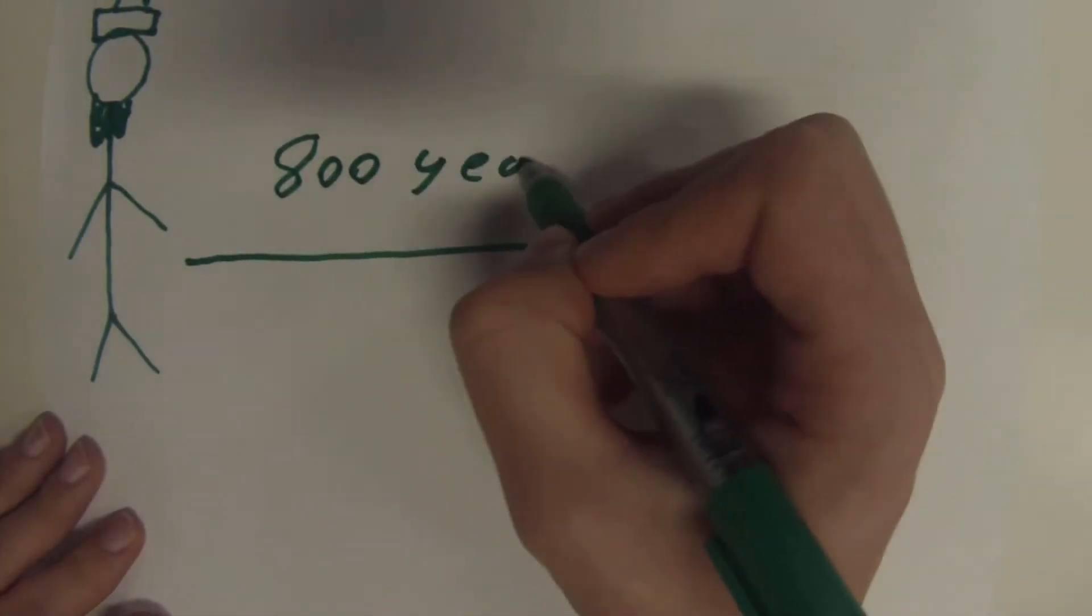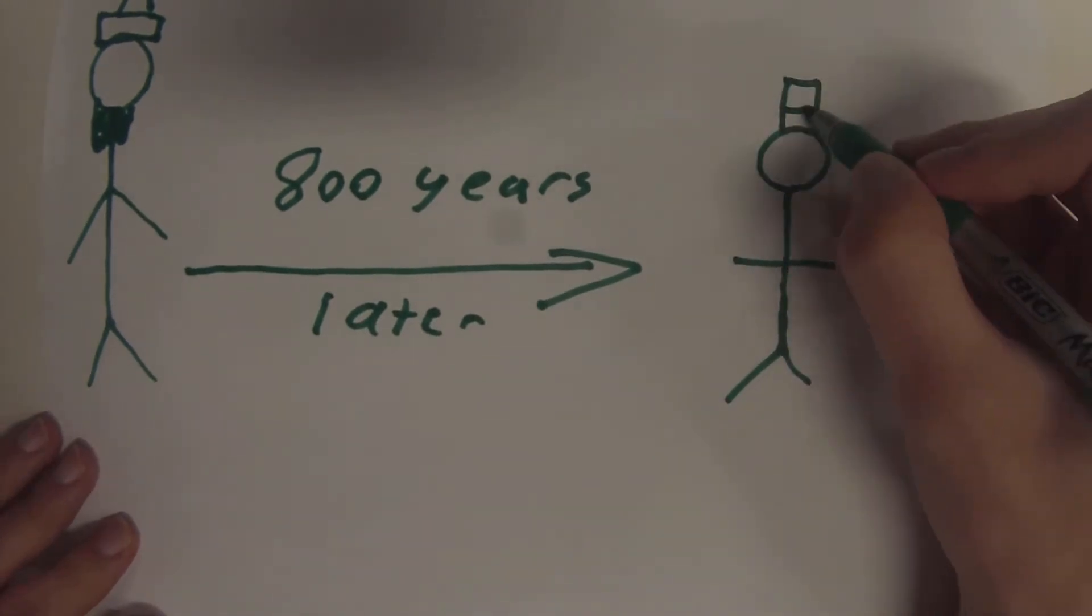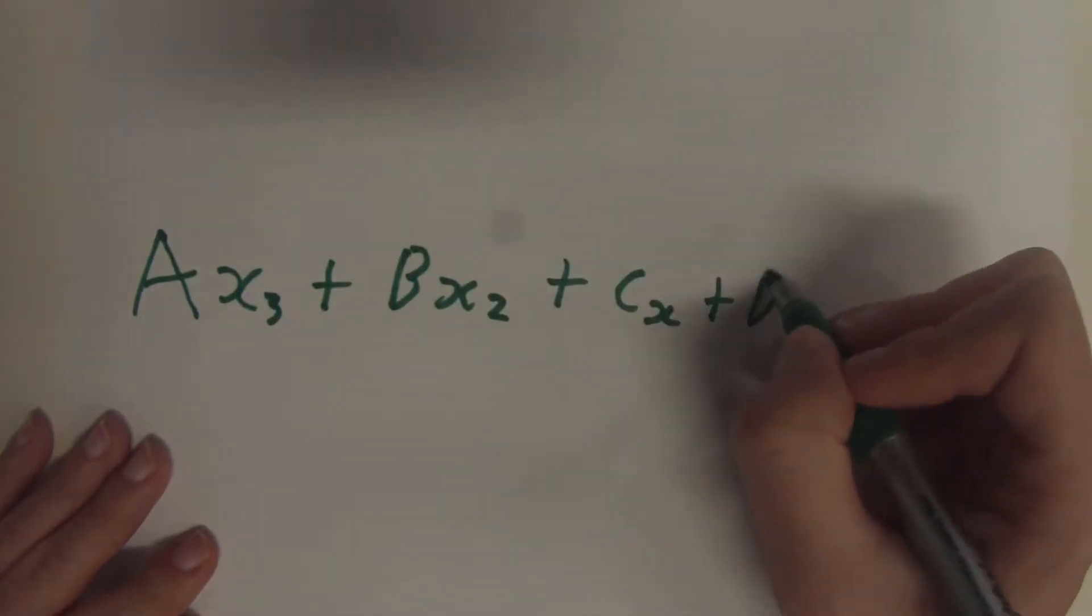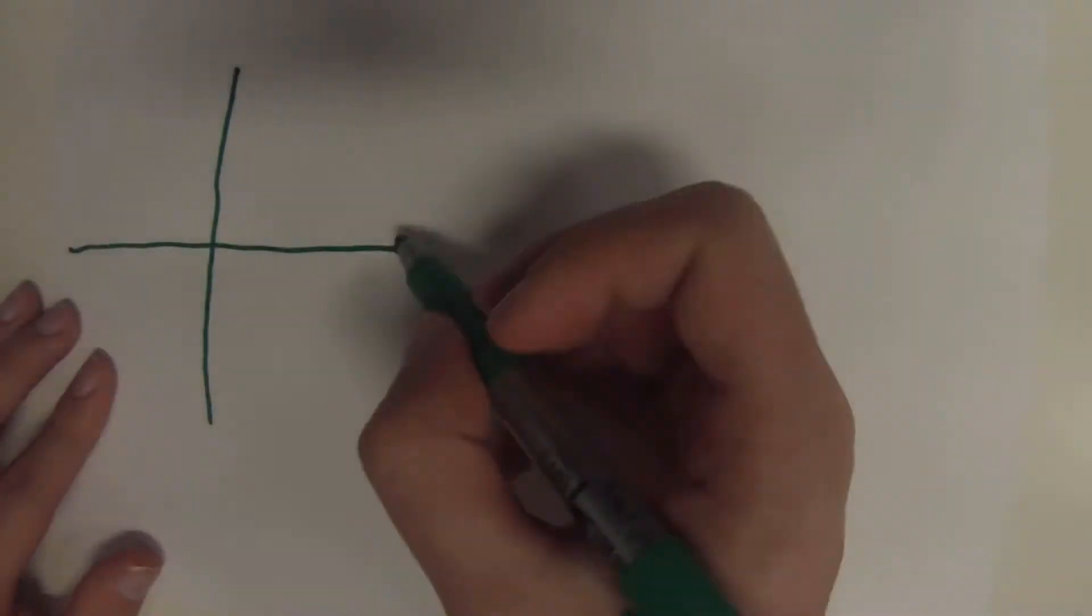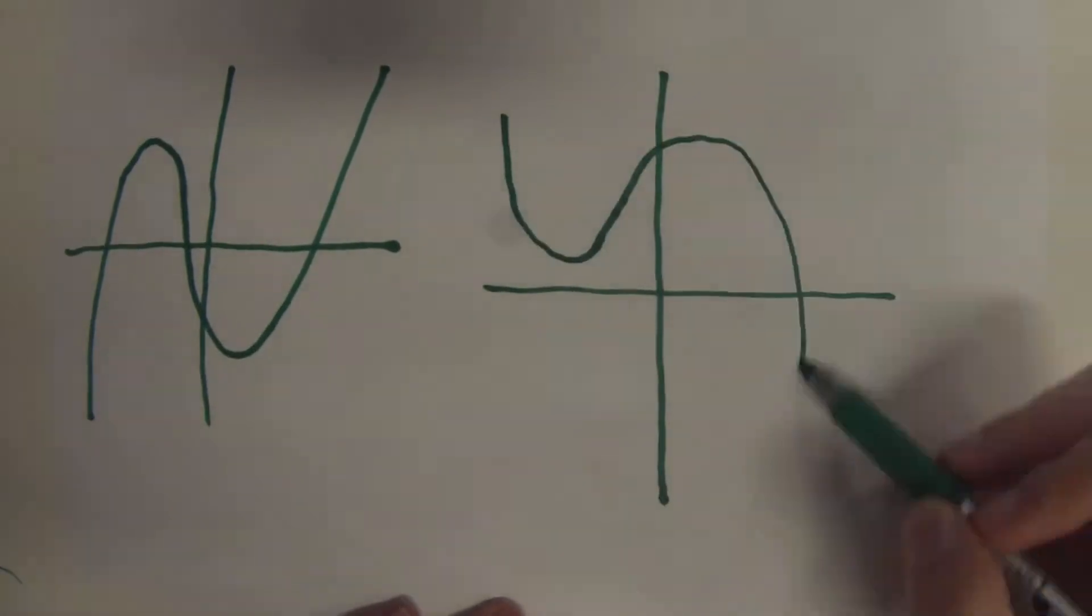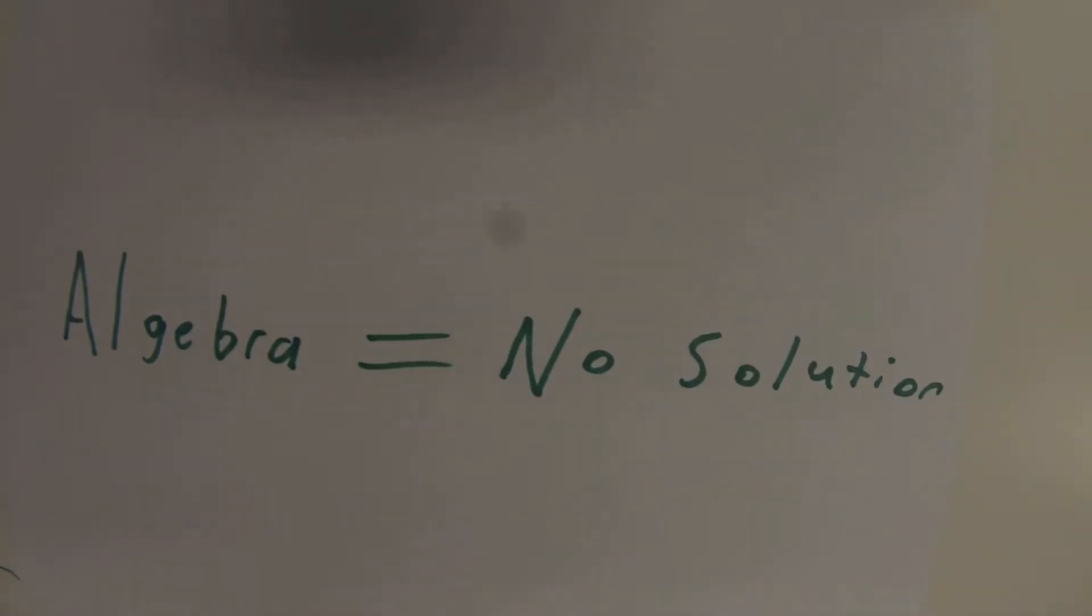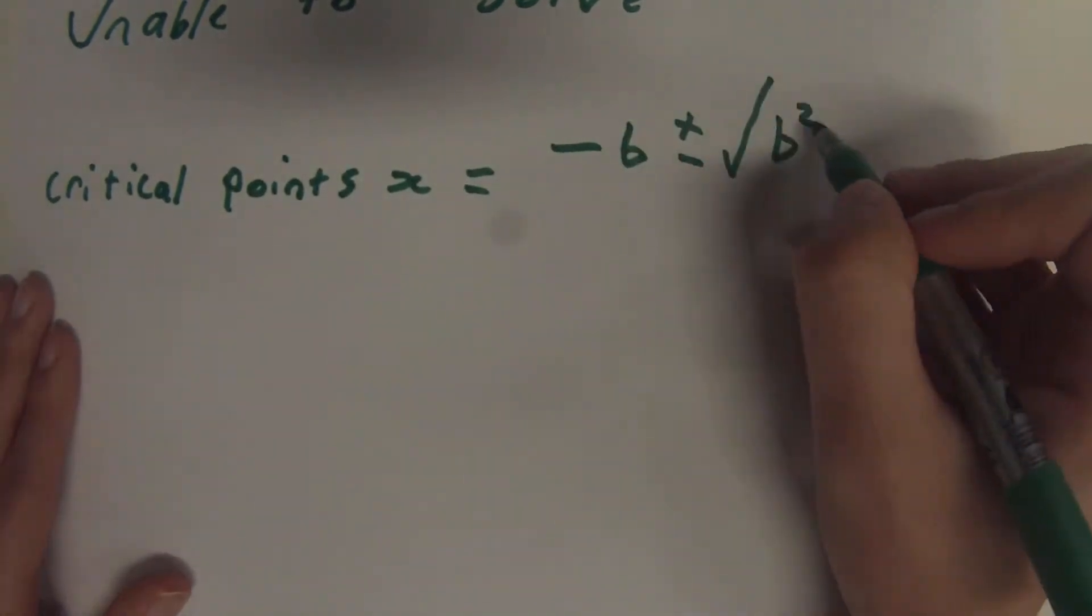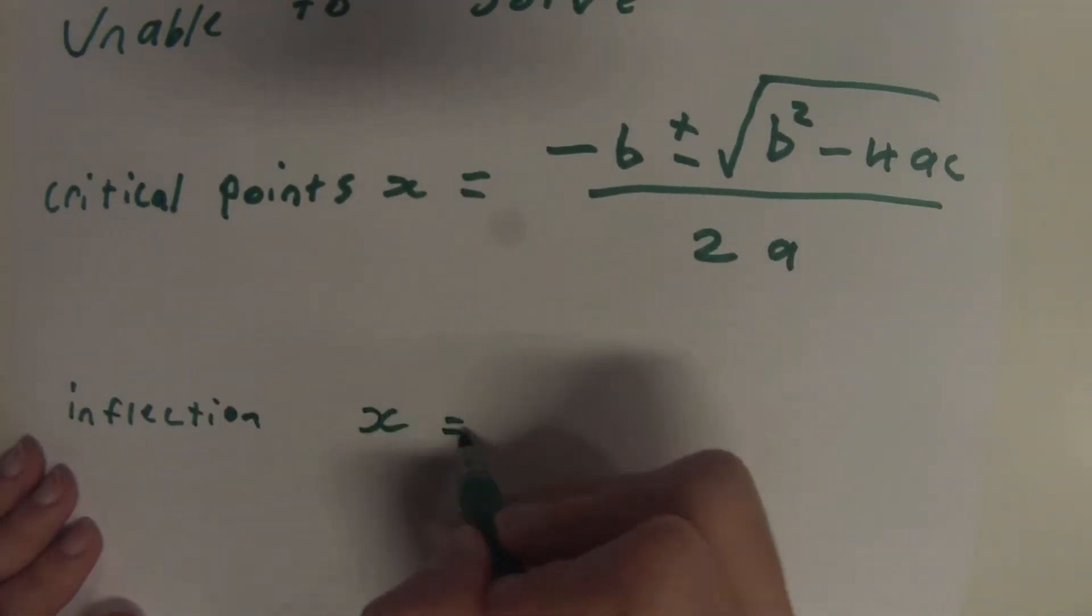Nicola Tartaglia was influenced by Al-Khwarizmi close to 800 years later through him developing a solution for a cubic, which is AX³ plus BX² plus CX plus D equals 0. So without algebra, which Al-Khwarizmi developed, there would be no solutions. For example, they would be unable to solve the critical points using the quadratic formula or points of inflection.